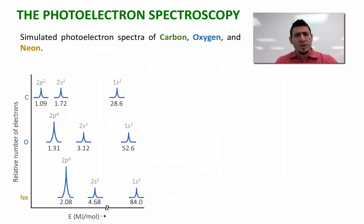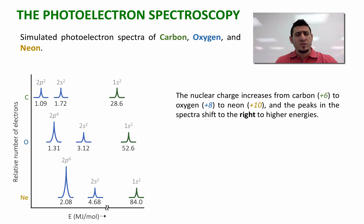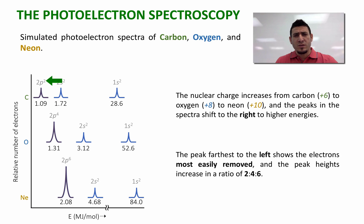Now using this technique, we can compare the photoelectron spectra of different atoms. In this example, I chose carbon, oxygen and neon where their spectra are represented here. We can clearly see that when the nuclear charge increases from +6 to +8 to +10, the energy required to remove the core electrons will increase from 28.6 to 52.6 to 84.0 respectively. We can also see that the intensity of the peripheral peaks or the peaks to the left will increase according to the number of electrons removed from the subshell.